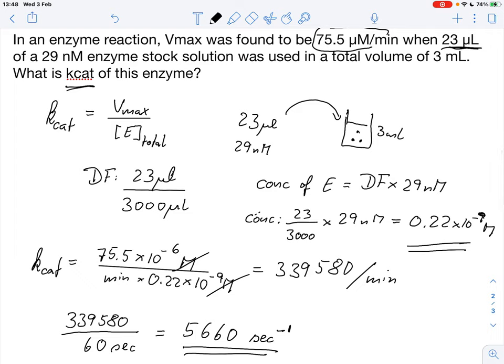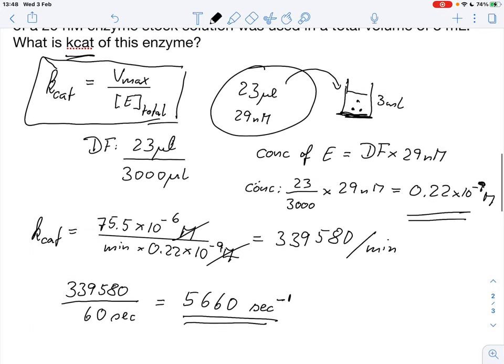So that would be the kcat for this enzyme. And all we need to do here was really take this dilution factor into account when we calculate the concentration of the enzyme in our solution, in the reaction mix. And then use this equation, kcat equals Vmax divided by the total enzyme concentration. And let's not forget to convert the minutes into seconds so that we have this in a nice standard form.